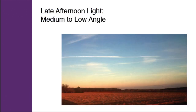Late afternoon light is at a very similar angle to morning light — medium to very low — and the color of the light again becomes very warm, ranging from yellow to red. In this case, because the light is almost dropping below the horizon, we are right at sunset. The light is a very warm red-orange, infusing the landscape with that color. The sun is behind us, flooding the landscape with that low-angled warm light.